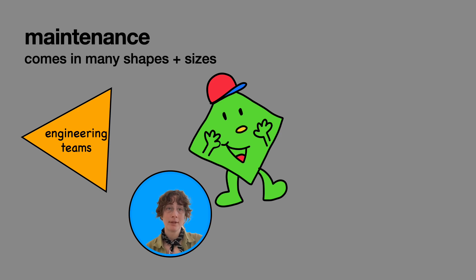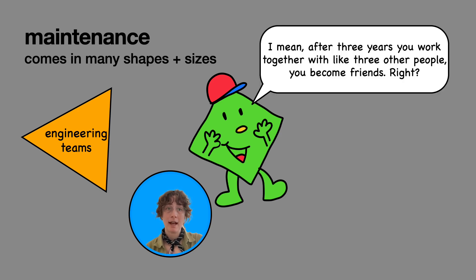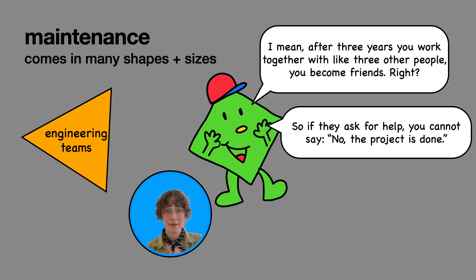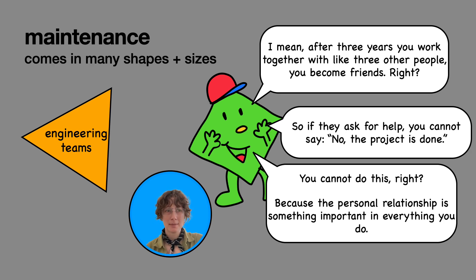One of the graduate students pointedly said, I mean, after three years you work together with like three other people, you become friends, right? So if they ask for help, you cannot say no, the project is done. You cannot do this, right? Because the personal relationship is something important in everything you do.